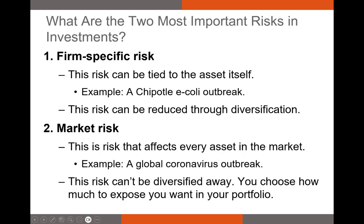The other type is market risk — the risk you can't diversify away. Every firm in the market is affected by this risk. No matter what stocks you hold, they're going to be affected by market risk. Some stocks will be affected a little more, some a little less, but this risk does not go away. Because you as an investor can't eliminate it, you should demand compensation for being exposed to it. A global pandemic is the best example — every firm was affected.